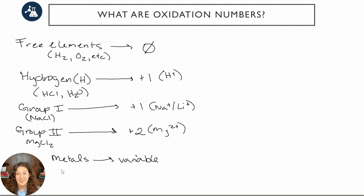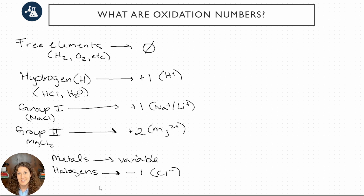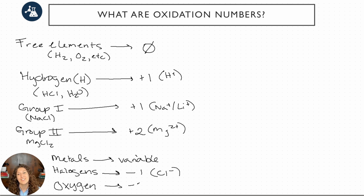Group 17 — our halogens — are going to be negative one. They like to be anionic. If sodium becomes positively charged, chloride becomes negatively charged. So our halogens tend to have a negative one consistently. Our last group are oxygen atoms in a bond — oxygen likes to have negative two. It's two away from its noble gas, so it tends to be O2- for most oxygen-containing compounds.